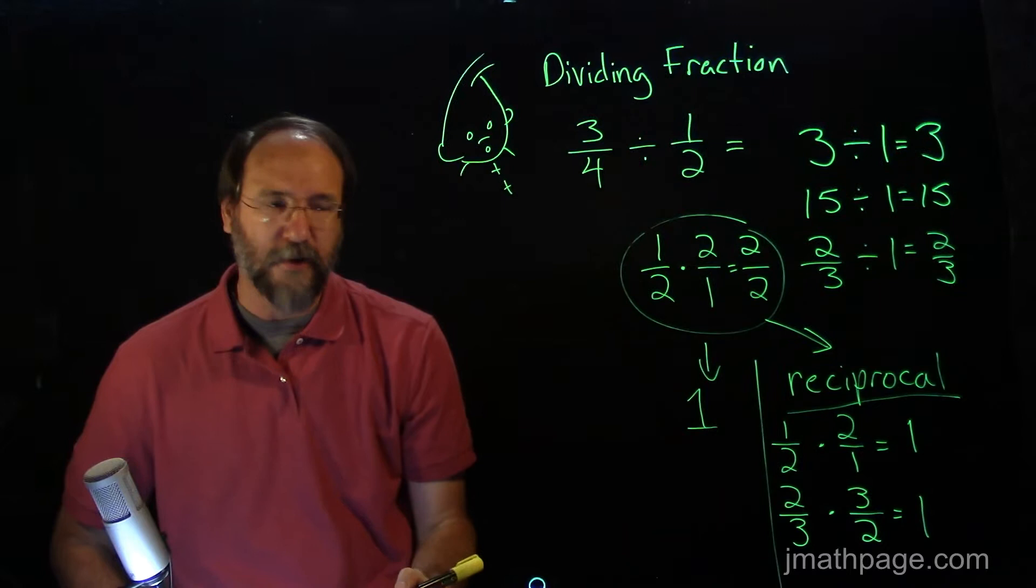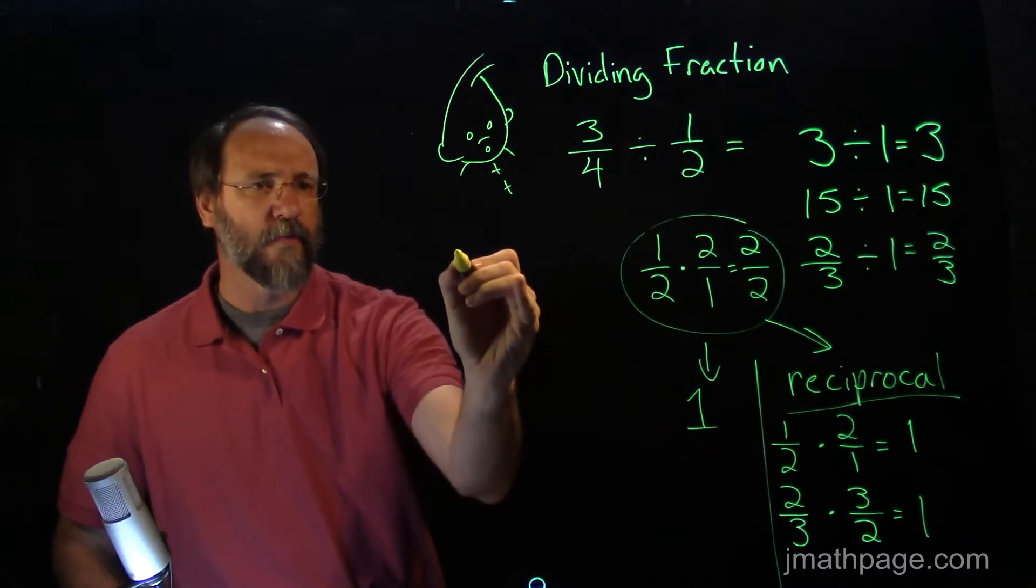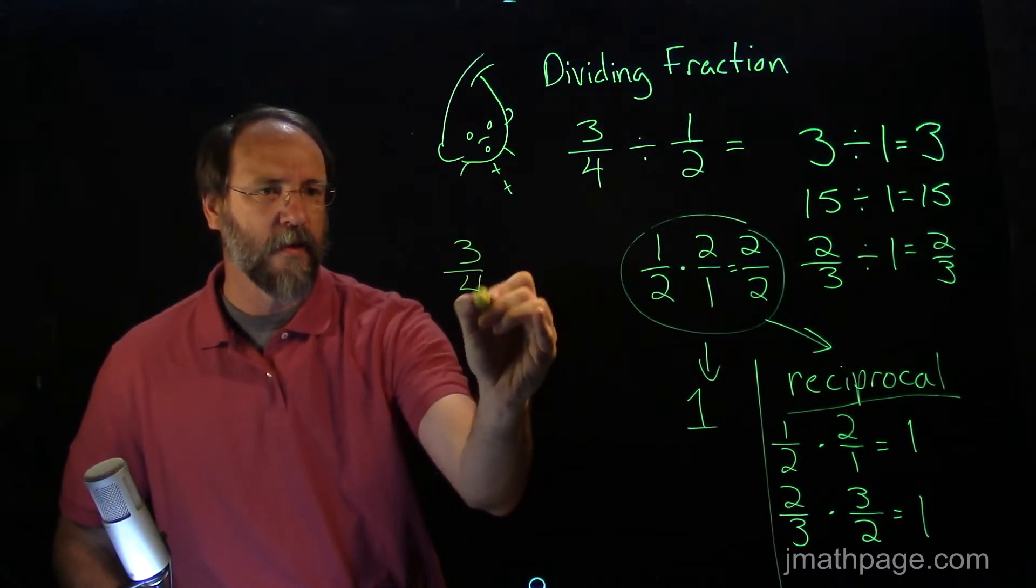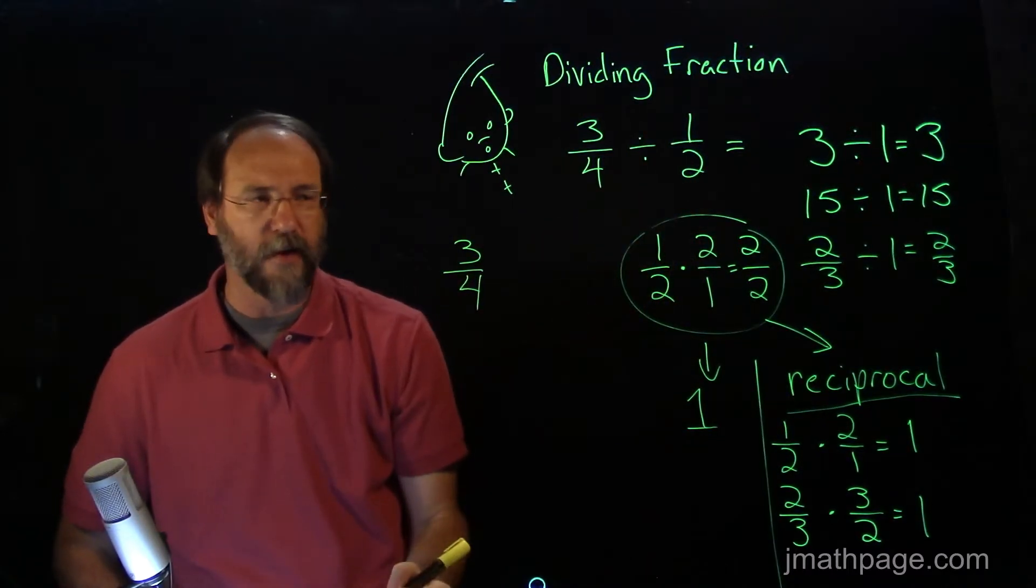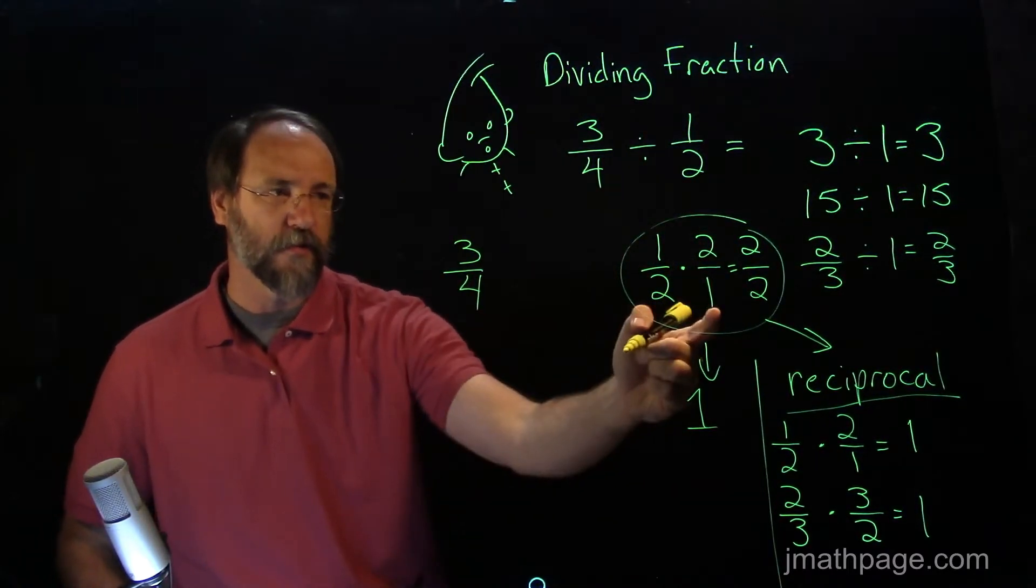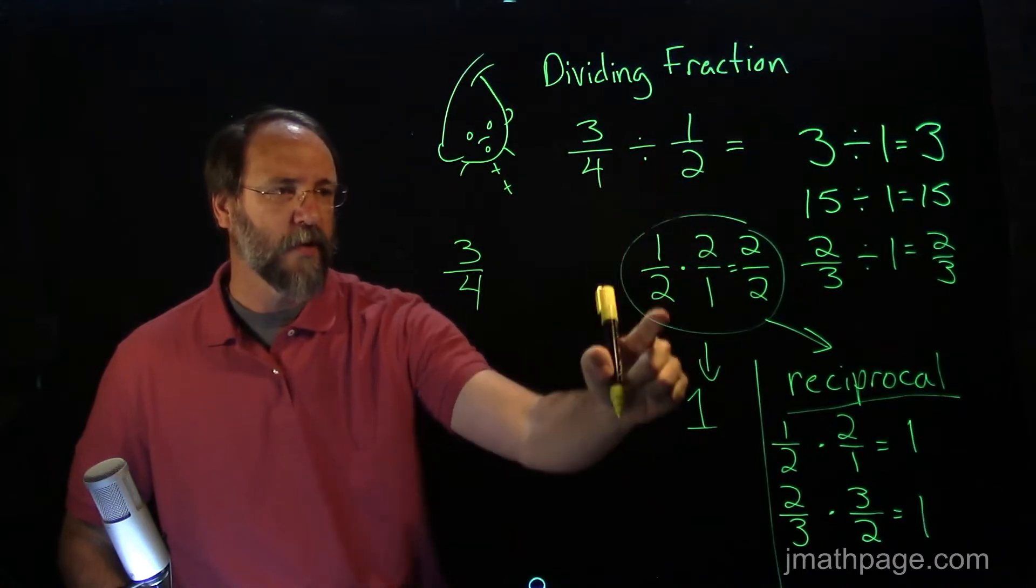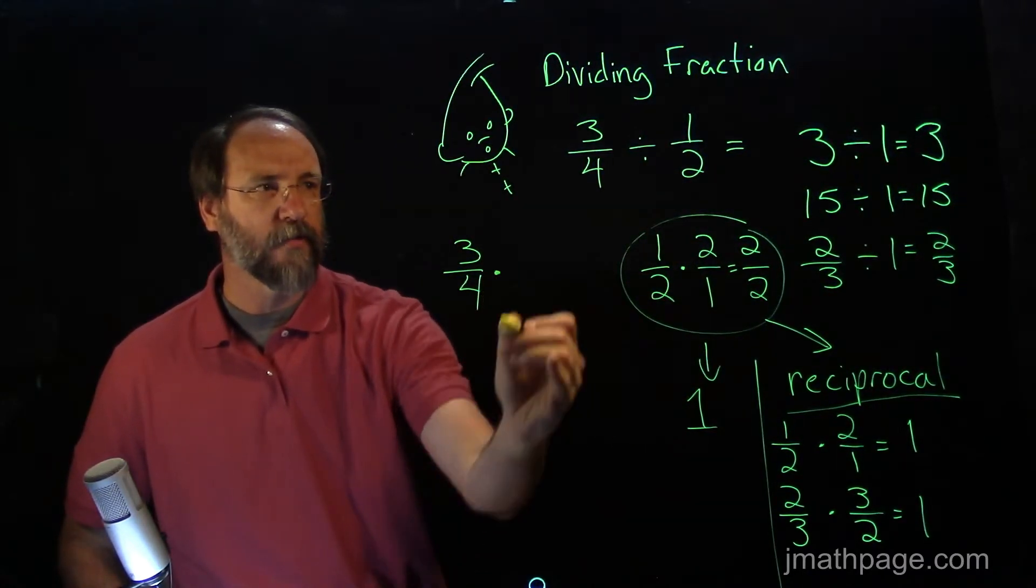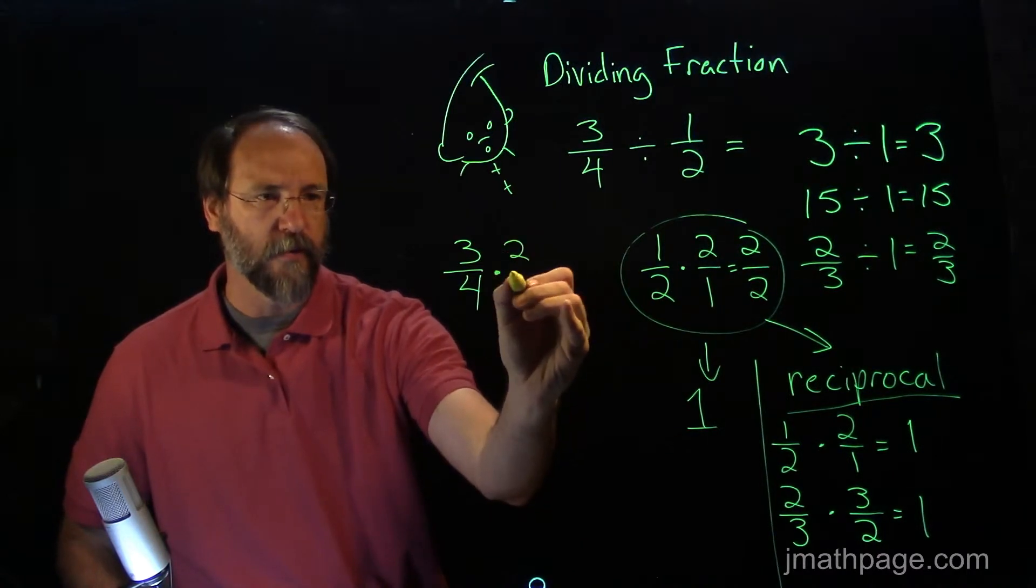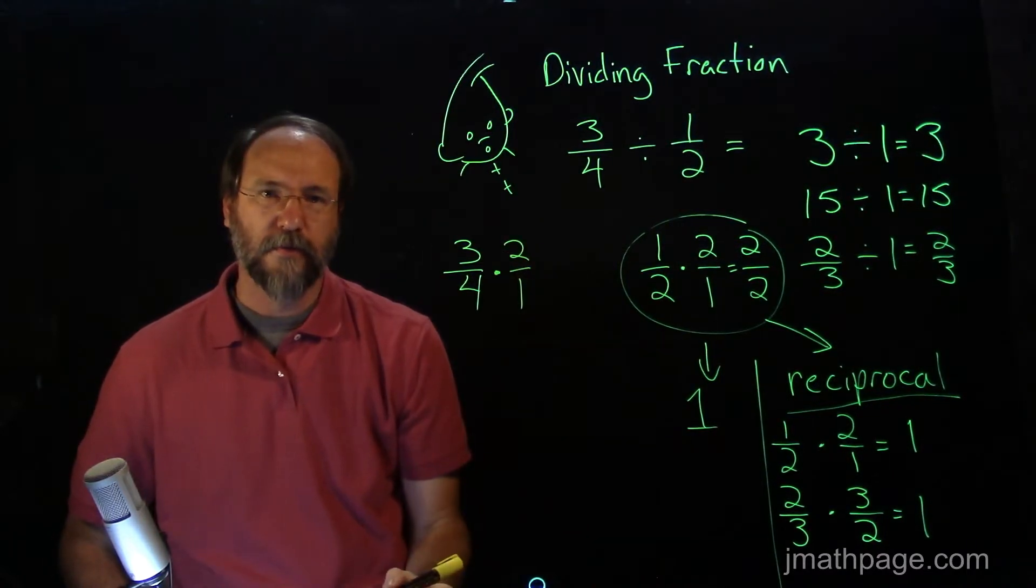Now, it's all well and good for me to change one-half into one. But three-fourths needs something, too. So let's take three-fourths. And remember, whatever I've done over here, in order to keep this problem safe and fair and equal, I have to do the same thing. So if I multiplied one-half times two over one, I'm going to have to multiply three-fourths by two over one.